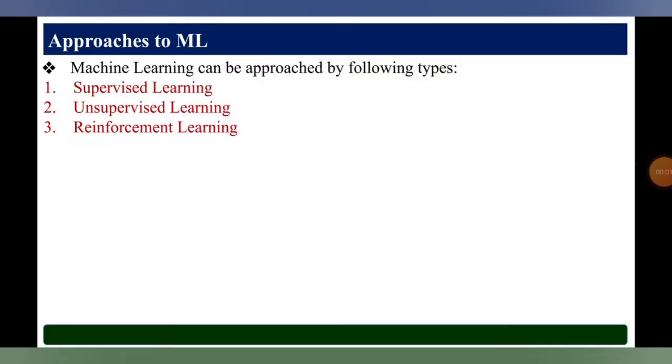Hi there, today we are going to learn approaches to machine learning. Machine learning can be approached by the following types: the first one is supervised learning, the next one is unsupervised learning, and the last one is reinforcement learning. This will be explained in further slides, but these are the main approaches to how machine learning will establish relationships or solve problems.